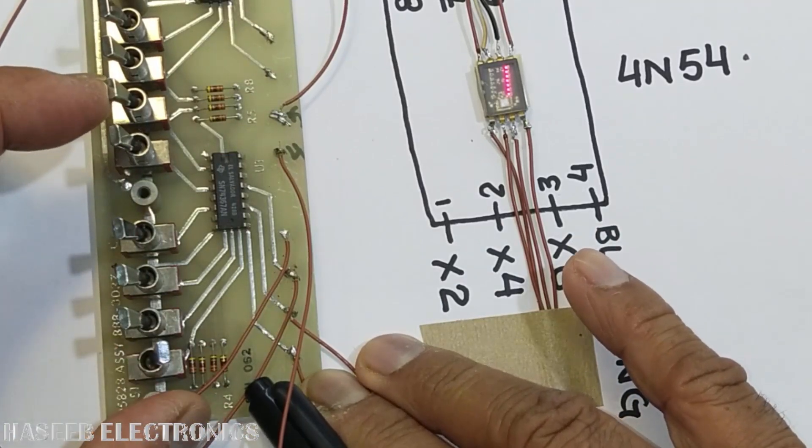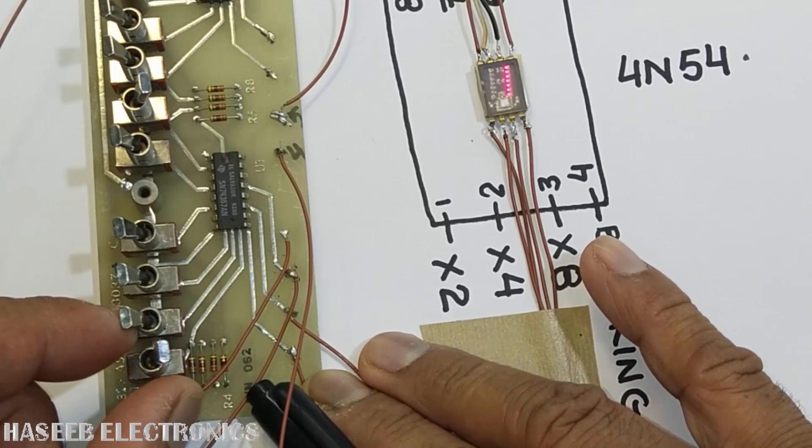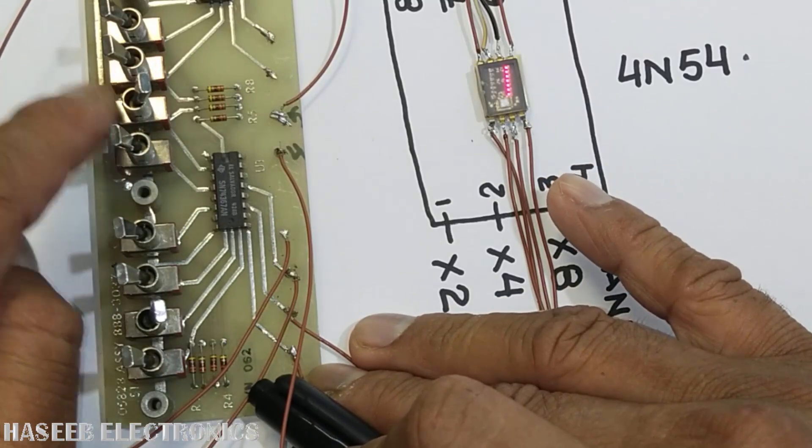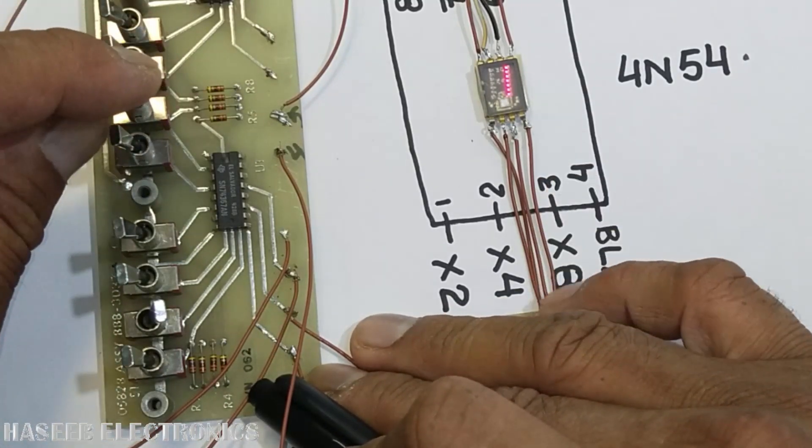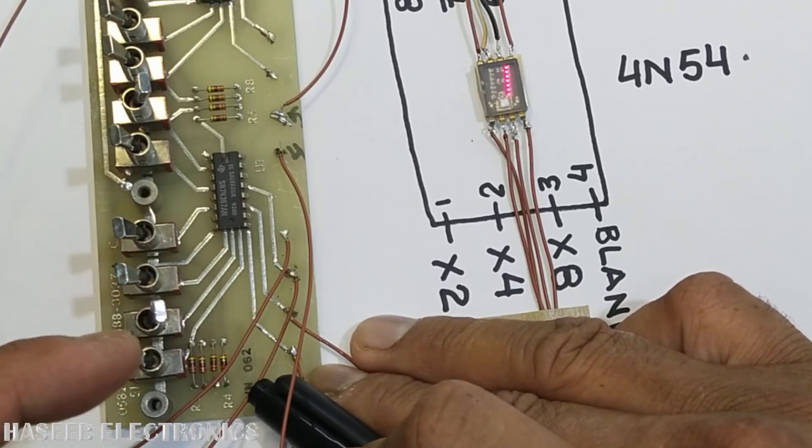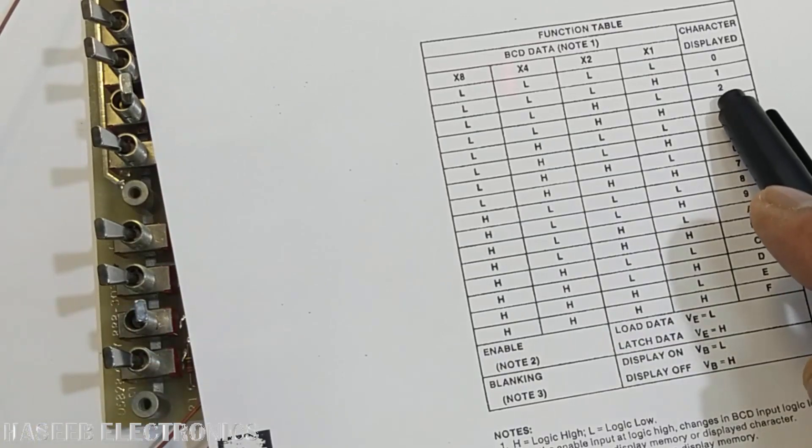Now if the enable pin is high, if we write any data, if we load any data in the input, it will not display until the enable pin is low. Now I will enable this pin and it will display 0010, that is the code for decimal number 2.